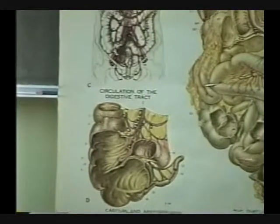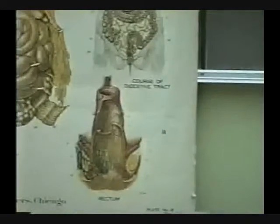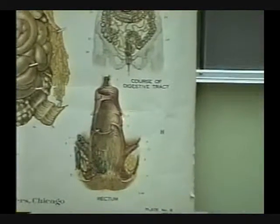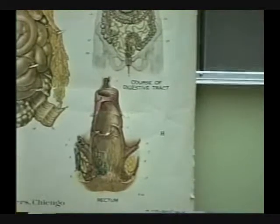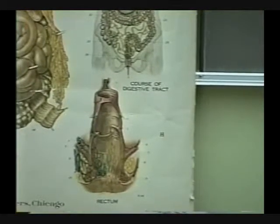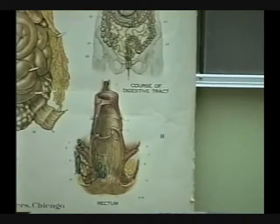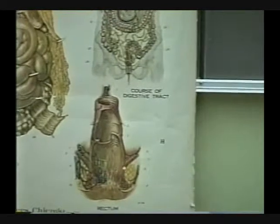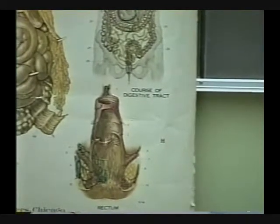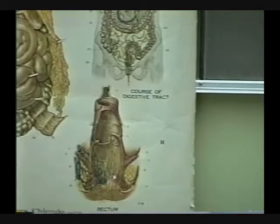Then panning across, we find the anus and rectum. The anal-rectal junction is right in here somewhere, where it changes from simple columnar epithelium.